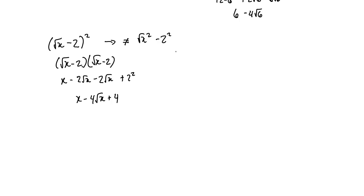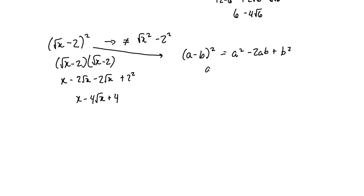That gives us x minus 4 root x plus 4. There's another way to do this by recognizing it as the pattern (a minus b)² = a² minus 2ab plus b², where a is root x and b is 2. Going directly from the pattern: a² is x, negative 2ab is negative 4 root x, and b² is positive 4 — same result.